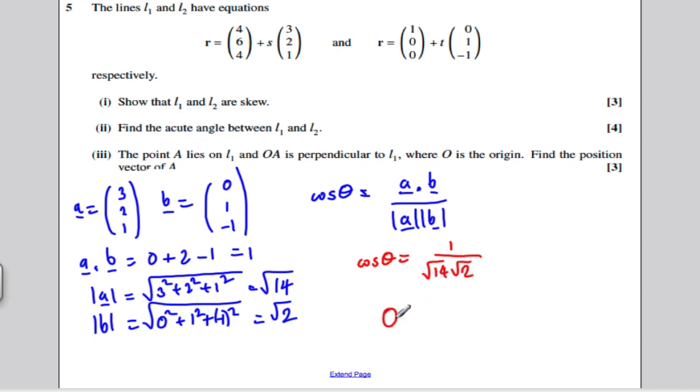Substituting into this formula then, cos theta is A dot B, which is 1, divided by root 14 times root 2. Work this out on your calculator and work out the inverse of that. Theta is 79.1 degrees to 3 significant figures and that is an acute angle, so it's the one you're looking for.